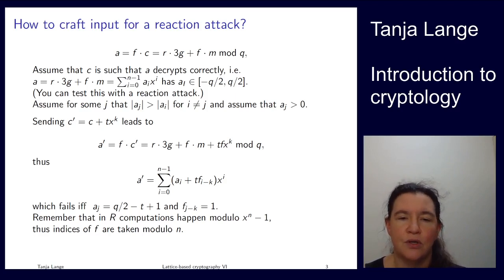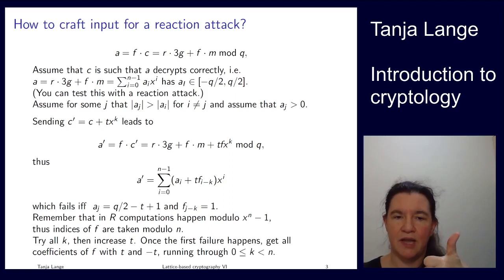One, two, three, four, and so on. So then we want to have this coefficient overflow for i equals j, and so that happens if a_j is q over 2 minus t plus one.